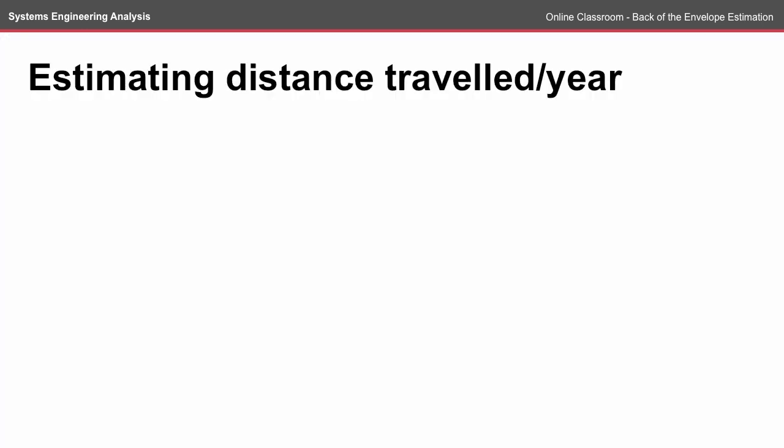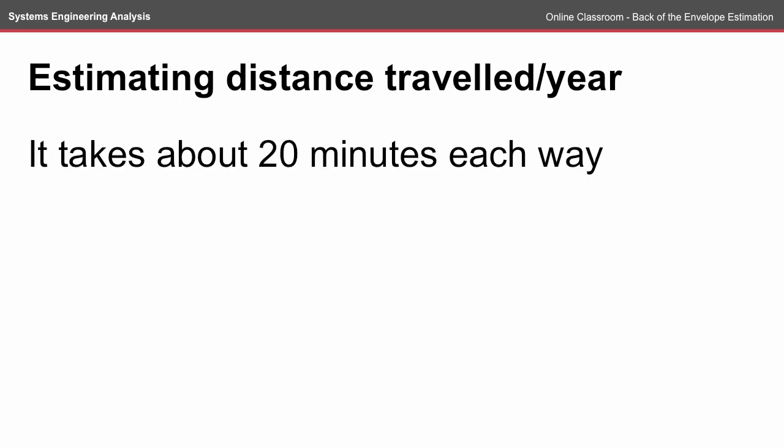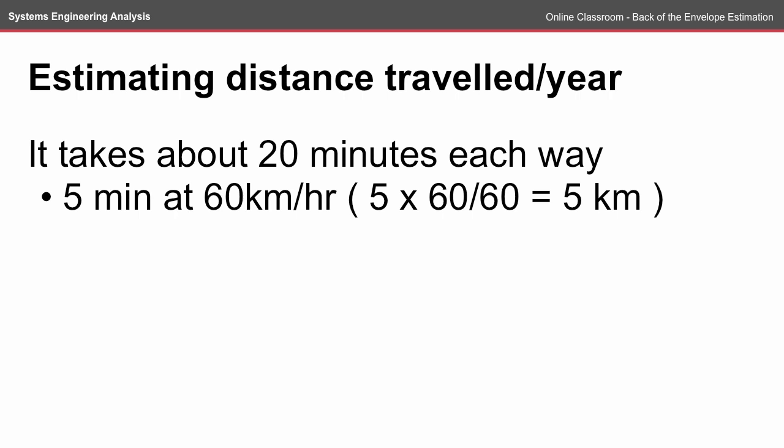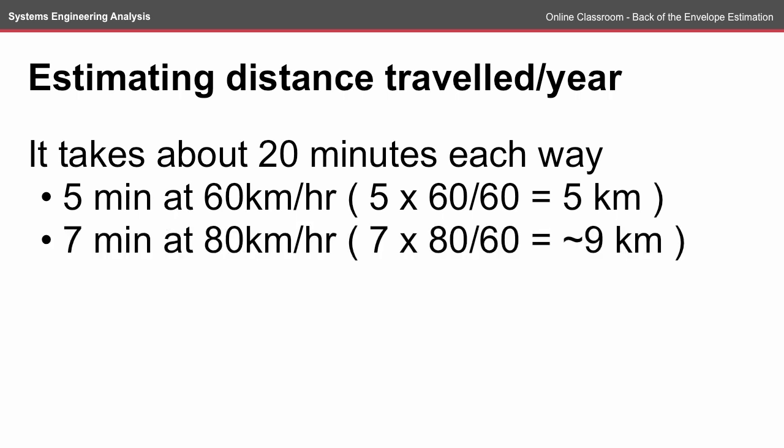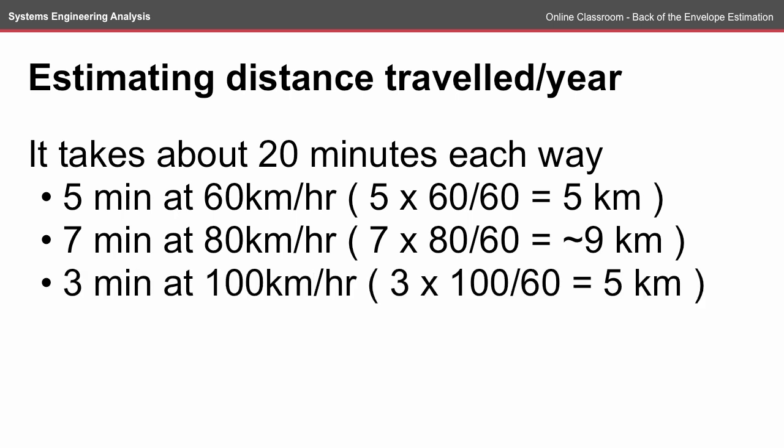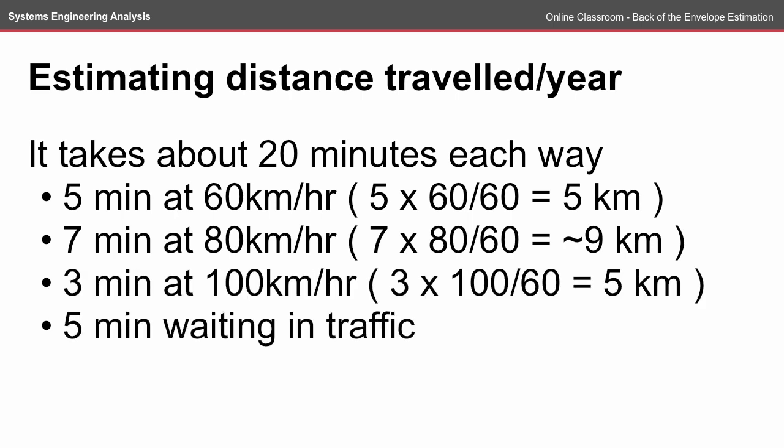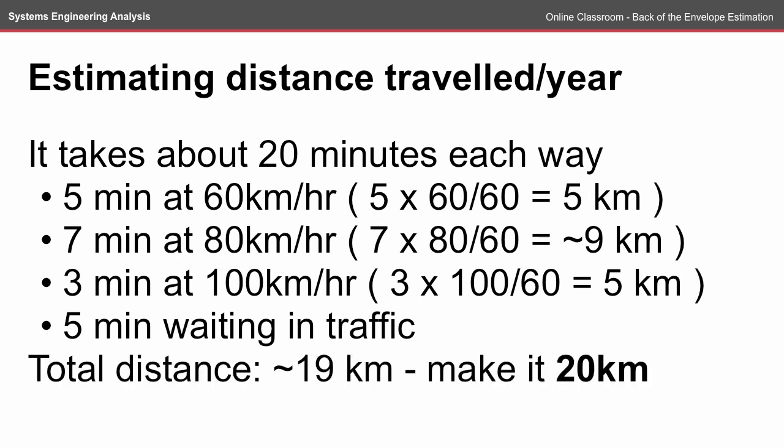Today we're going to estimate the distance traveled per year to and from work. It takes about 20 minutes each way — about five minutes at 60 kilometers an hour, seven minutes at 80 kilometers an hour, and three minutes at 100 kilometers per hour. With about five minutes waiting in traffic, that makes the total distance about 19 kilometers, which we'll round up to 20 kilometers to make the numbers a bit easier.